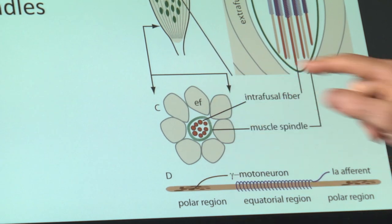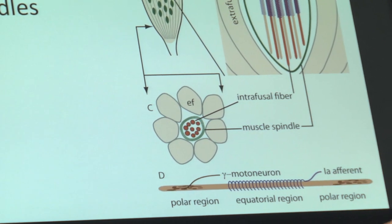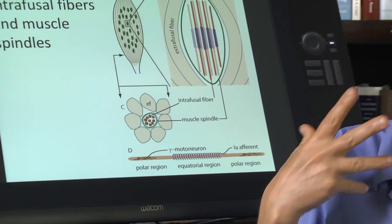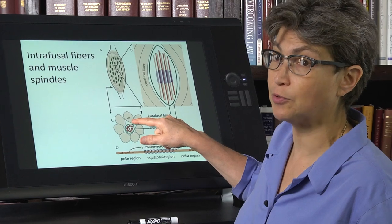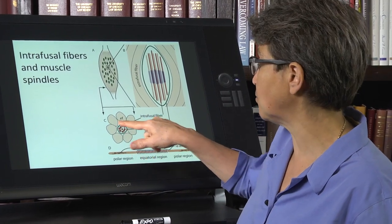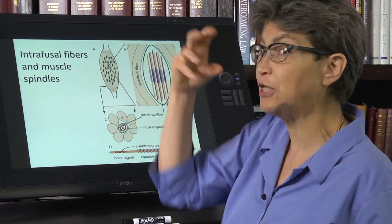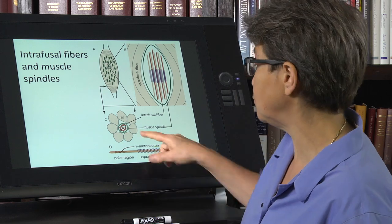The big fibers, the ones that produce visible contraction, force that produce the force of contraction, are called extrafusal fibers. And the ones that are in these muscle spindles are intrafusal. They're intrafusal fibers.